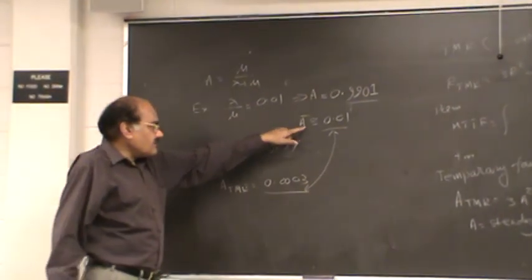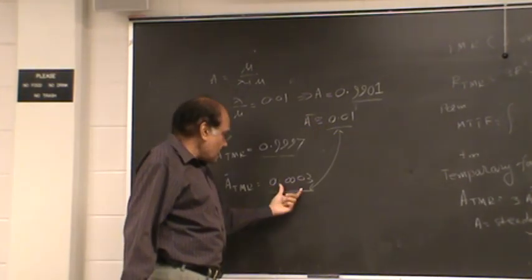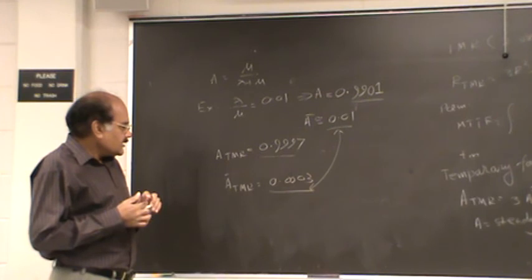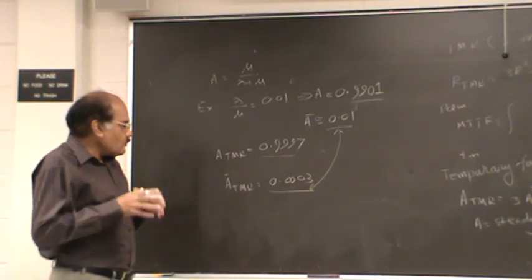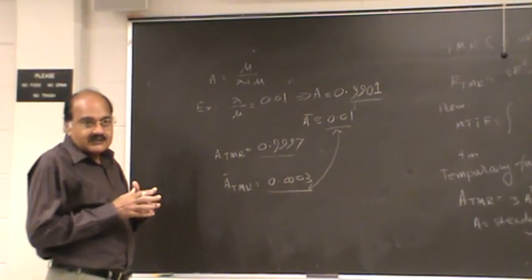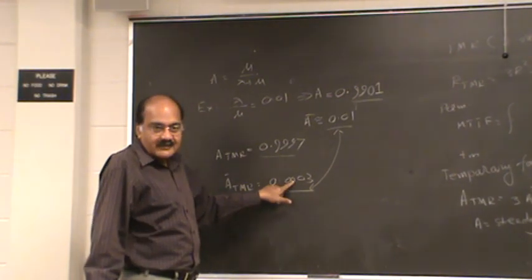So it is unavailable 1% of the time, and this is unavailable 0.03% of the time. Right? So this is much more highly available.